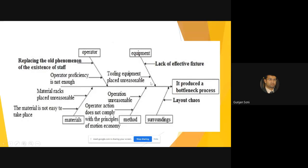What are the causes for that? We can search the causes broadly in five different headings: operator, equipment, materials, methods, and surroundings. Surroundings could be one reason that if you look at the layout is chaotic.